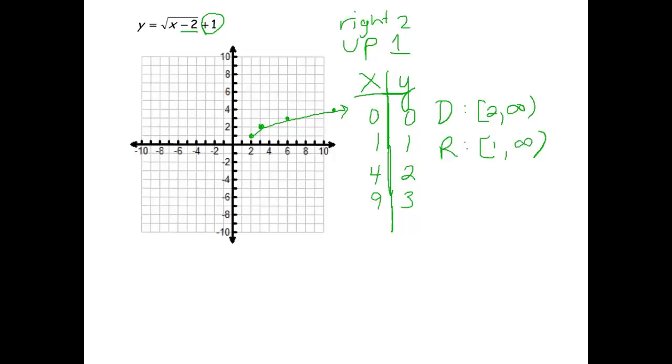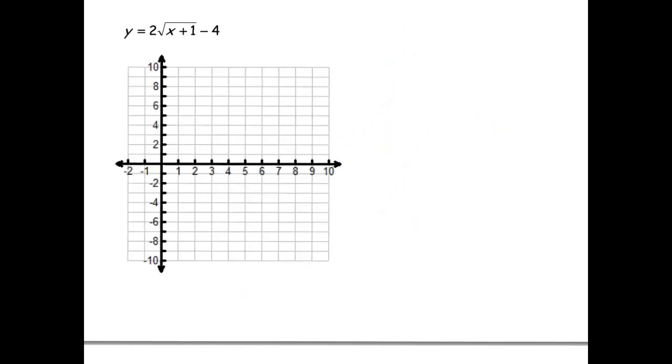And now for a new example. So here's our function. And notice that this has three translations. Our first translation, I would like to start with this here, our inside, the square root, which is moving the graph left one.